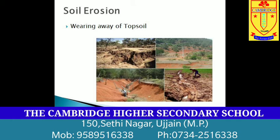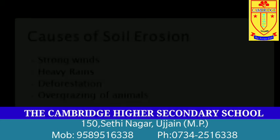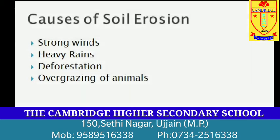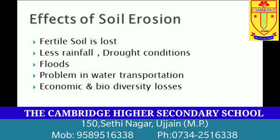Iske karan mitti ki fertility kam hoti jaati hai aur woh dheere dheere banjar ho jaati hai. So what are the causes of soil erosion? The various causes of soil erosion are strong winds, heavy rains, deforestation, overgrazing of animals, etc. After coming to know the causes of soil erosion, let us see the effects of soil erosion. Firstly, the important fertile soil is lost, which affects agriculture as the land becomes less fertile.